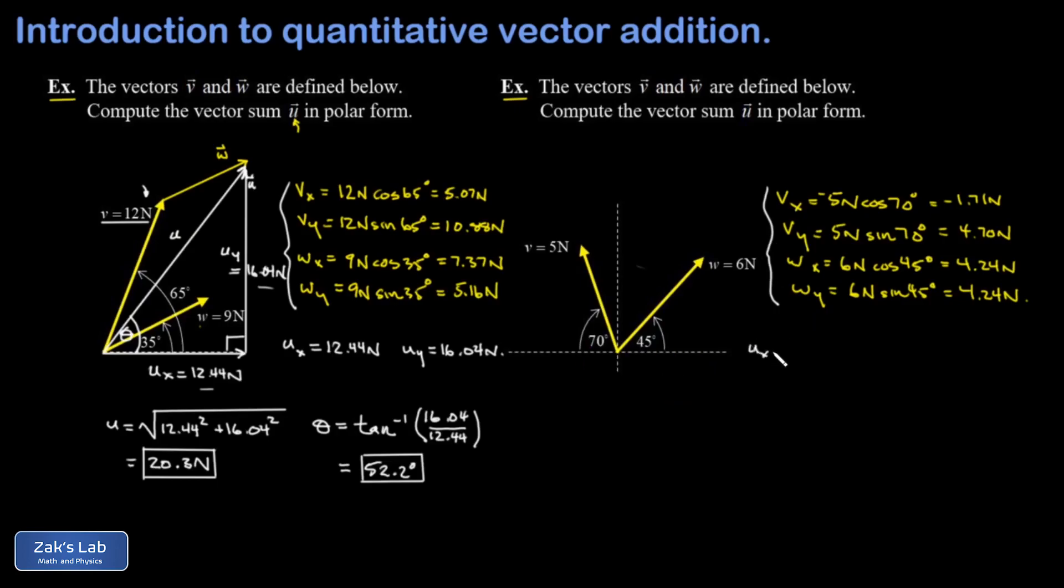We get our total x component—again that's 4.24 minus 1.71—and that gives me a total of 2.53 newtons. We get our total y component. Those both point up so those magnitudes add, and that gives me 8.94 newtons. I'll visualize the right triangle in a separate picture. Our total x component is here, our total y component is here, and the vector sum points from the tail of the first to the head of the last. That has a magnitude that we're calling lowercase u and we have an angle of theta. We run through the Pythagorean theorem. To three sig figs this gives me 9.29 newtons. Our angle is the inverse tangent of the opposite over adjacent—the angle whose tangent is 8.94 divided by 2.53. This gives me 74.2 degrees.